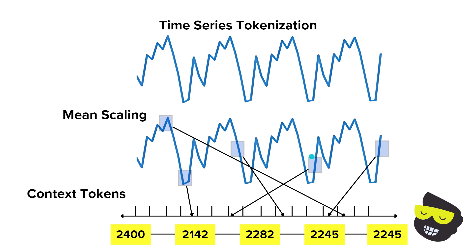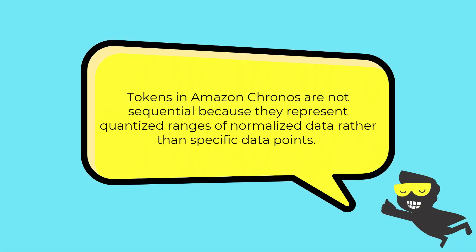Now, one question that you might have is why are tokens not sequential? The token numbers are not sequential because they represent quantized ranges of the normalized data and not the actual data points themselves. Each token is an identifier for a specific range of values rather than the position in the time series. This allows the model to focus on the distribution of values rather than their exact sequence. And this leads to the capture of overall patterns.